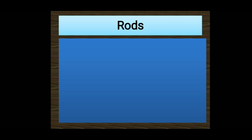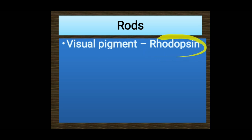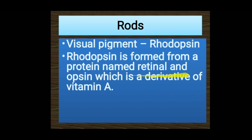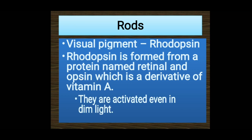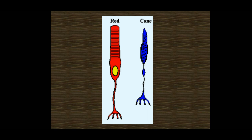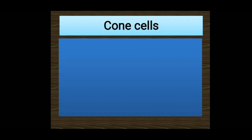Now let's see the features of rod cells. The visual pigment present is rhodopsin, which is formed from a protein called retinal and opsin. Rhodopsin has a relation with vitamin A — vitamin A helps in the synthesizing of rhodopsin. Rod cells are activated even in dim light; only a little light is needed for the activation of the rod cell.